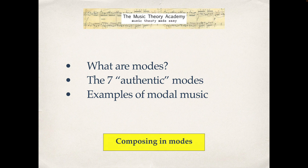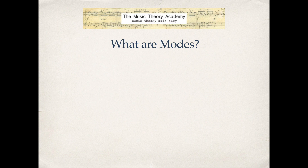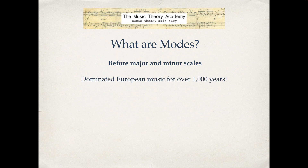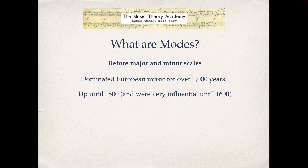Firstly, some background: what are modes? We're used to listening to music that is primarily written in major and minor scales, but that's not always been the case. Before major and minor scales, we had modes. Modes dominated European music for over a thousand years, from about the year 500 until 1500, and they were still really influential for about another hundred years after that, until about 1600. This is when major and minor scales started to be developed.